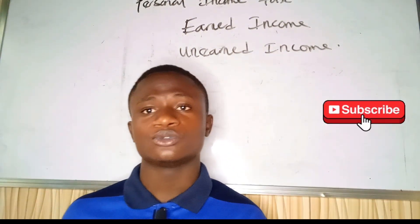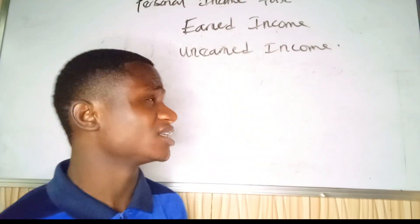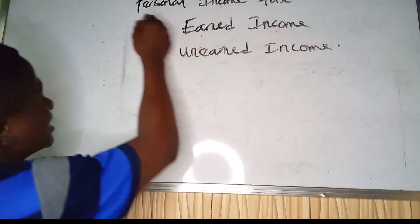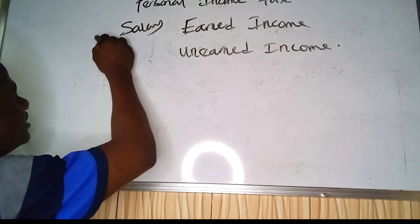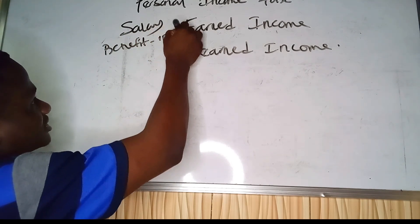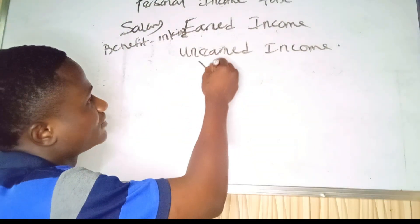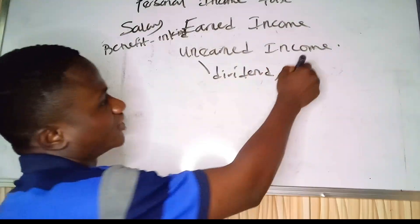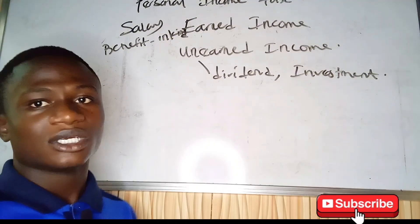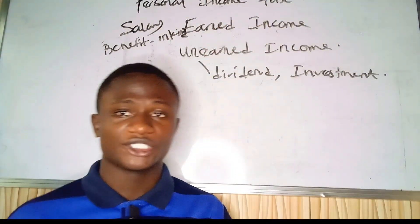So when dealing with personal income tax, the first thing we need to do is get our earned income, get our unearned income, then add them together. Examples of earned income include salaries and benefits in kind. Examples of unearned income include dividends, investments, and so on.